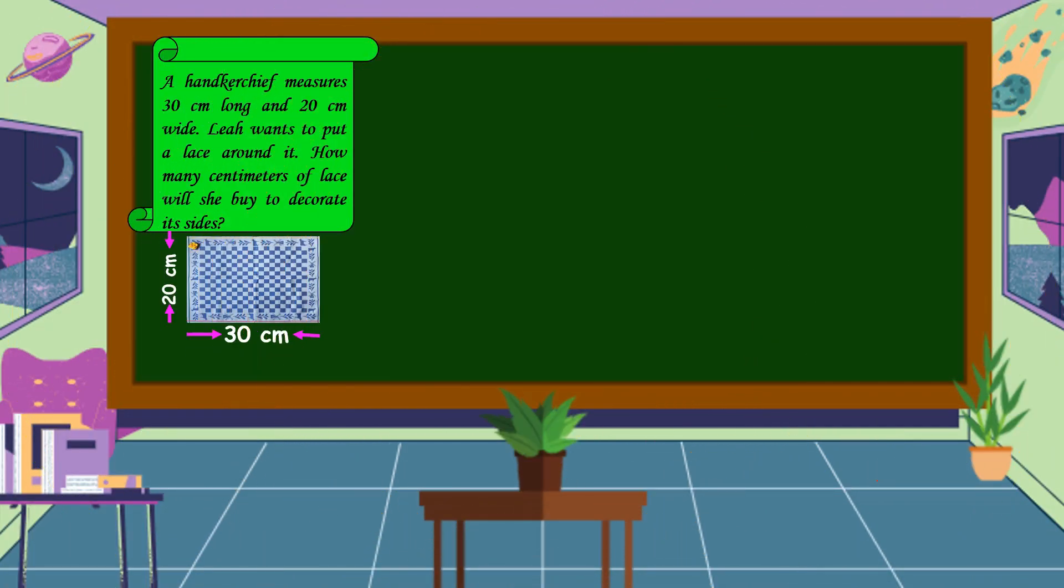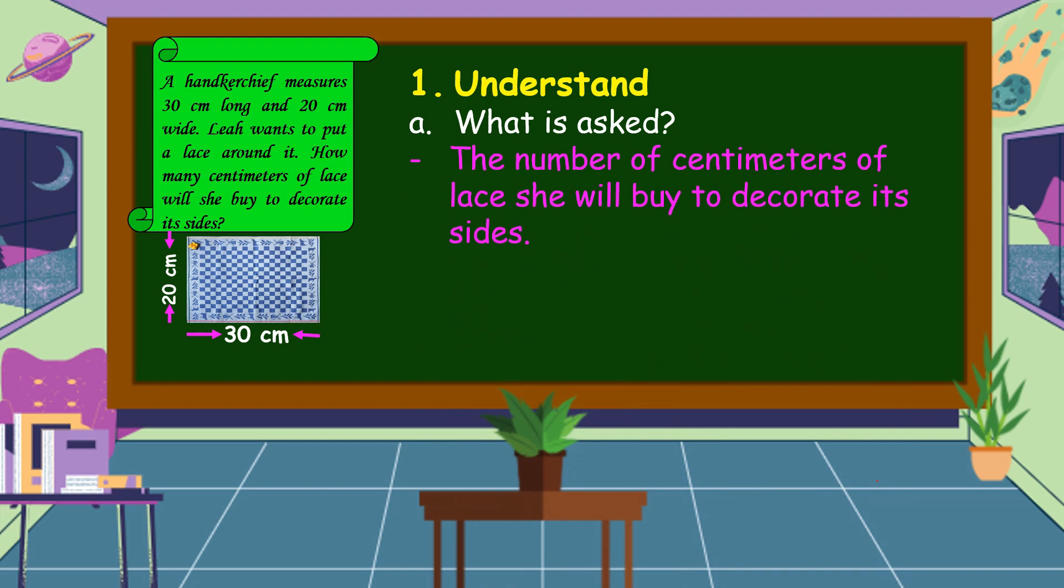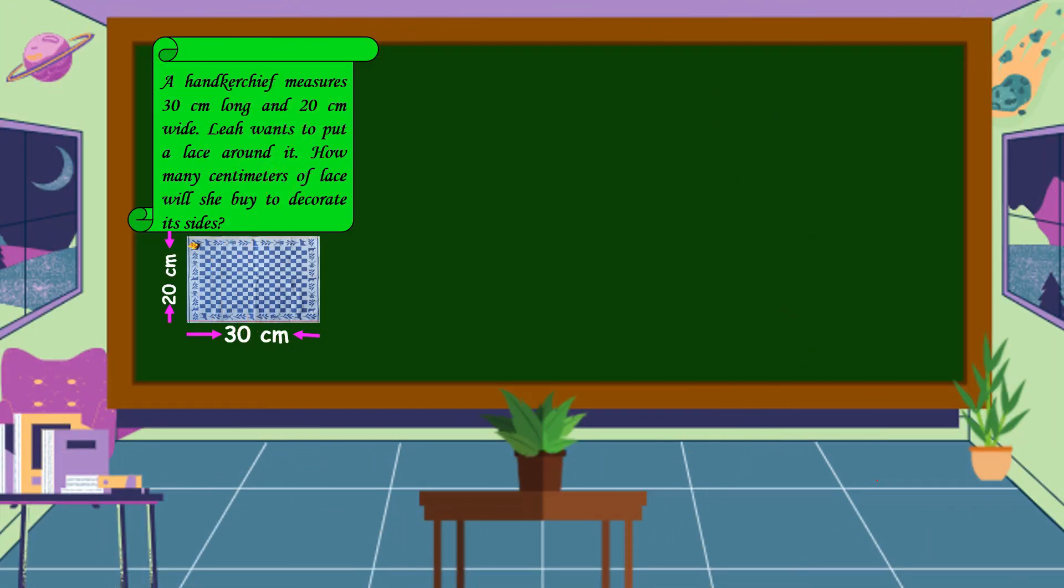To answer this problem, we're going to use the four-step plan. First, we're going to understand the problem. We should know what is asked. In this problem, it is asking for the number of centimeters of lace she will buy to decorate its sides. What are the given facts? The given facts are 30 centimeters long and 20 centimeters wide.